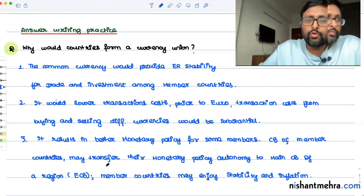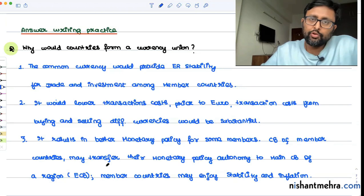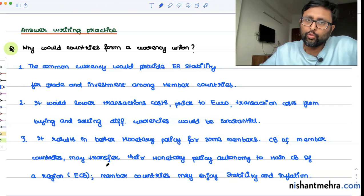So a currency union can also help in lowering the borrowing costs. How? Because it is removing the exchange rate instability. So it is removing the depreciation risk which might come from the exchange rates, or it is also reducing the price risk or inflation risk by giving the monetary policy autonomy to the main central bank.